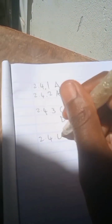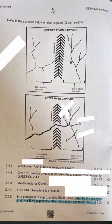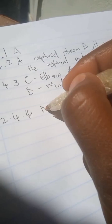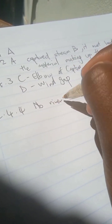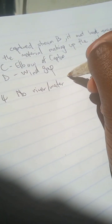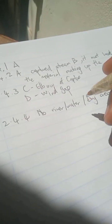For question 2.4.4, give one characteristic of feature D, the wind gap. In the wind gap, you can see there is no river or water — it is a dry area. There is nothing there anymore; the water supply has been cut off.